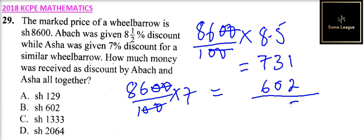So when you add, you get 1333. 7 plus 6 is 13. So that is the amount of money that they received as discount and checking the answer, the correct answer is C. So that is how you arrive to the answer in this question.